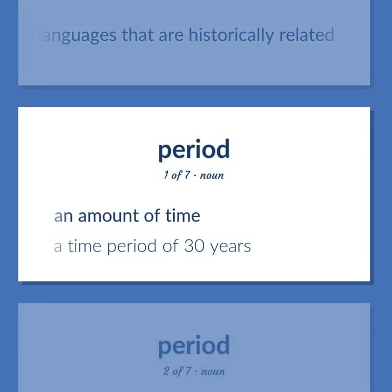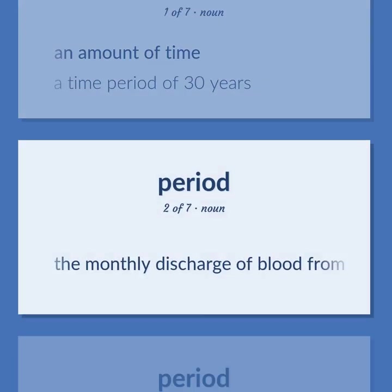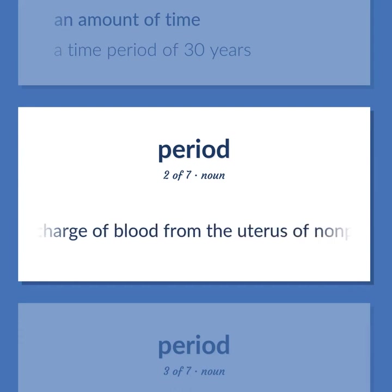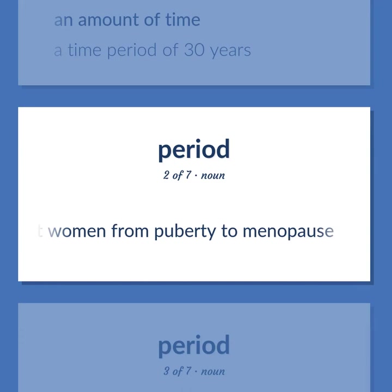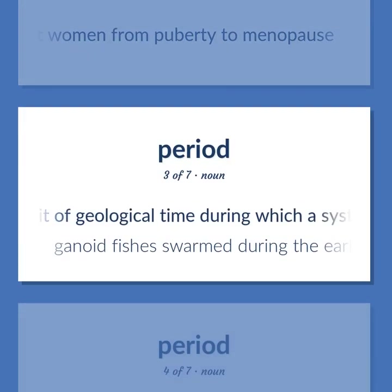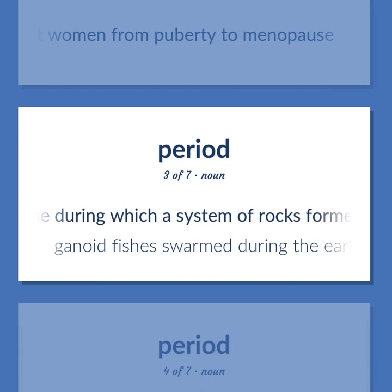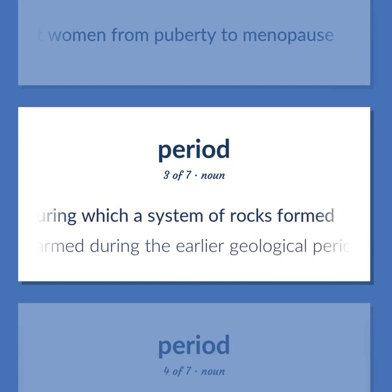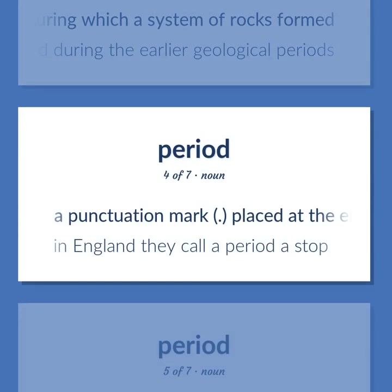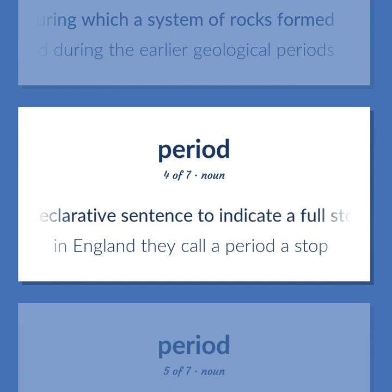Period: An amount of time — a time period of 30 years. The monthly discharge of blood from the uterus of non-pregnant women from puberty to menopause. A unit of geological time during which a system of rocks formed — ganoid fishes swarmed during the earlier geological periods. A punctuation mark placed at the end of a declarative sentence to indicate a full stop or after abbreviations — in England they call a period a stop.